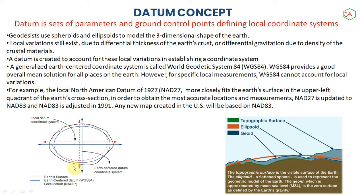Geodesists actually use spheroids and ellipsoids to model the 3D shape of the Earth because local variation still exists. There are local variations resulting from different thicknesses of the Earth's crust or different gradation outcomes due to the density of crustal material, and that brings the issue of datum.